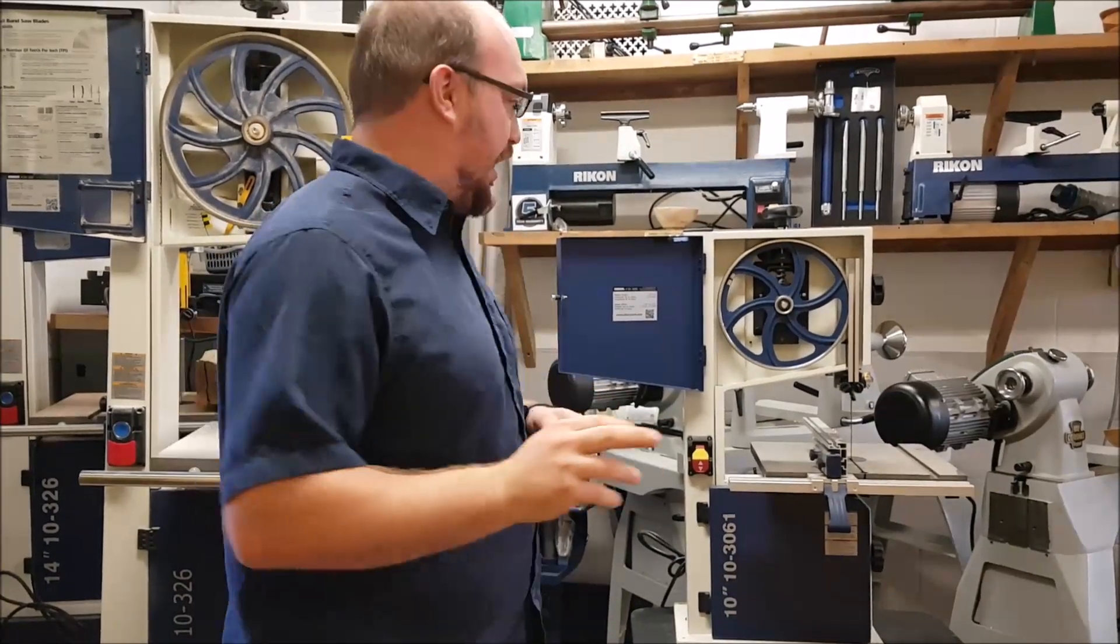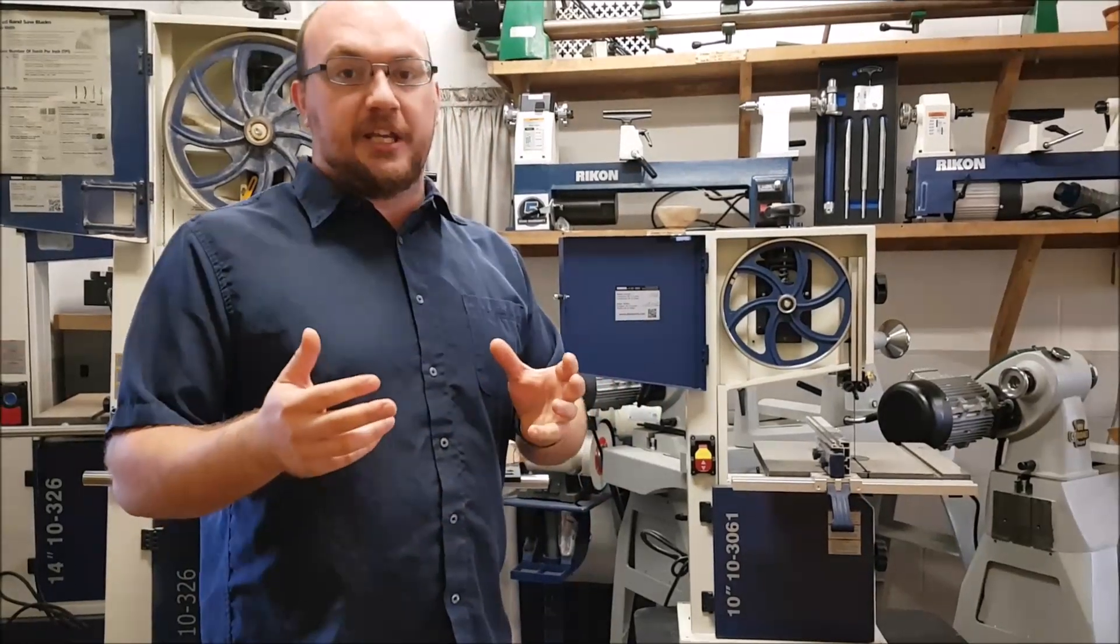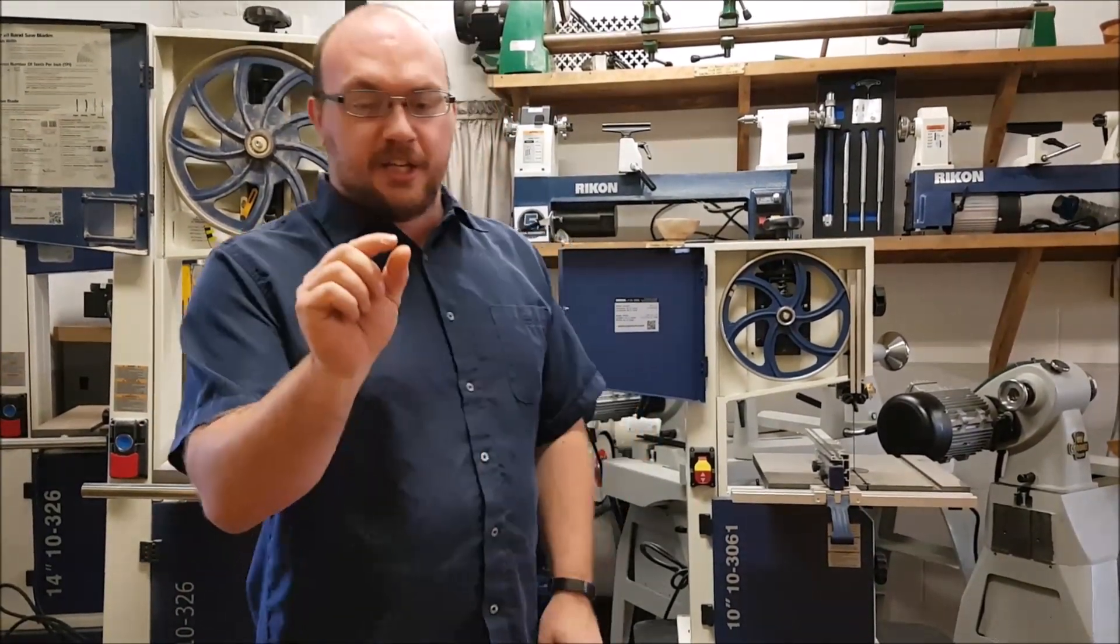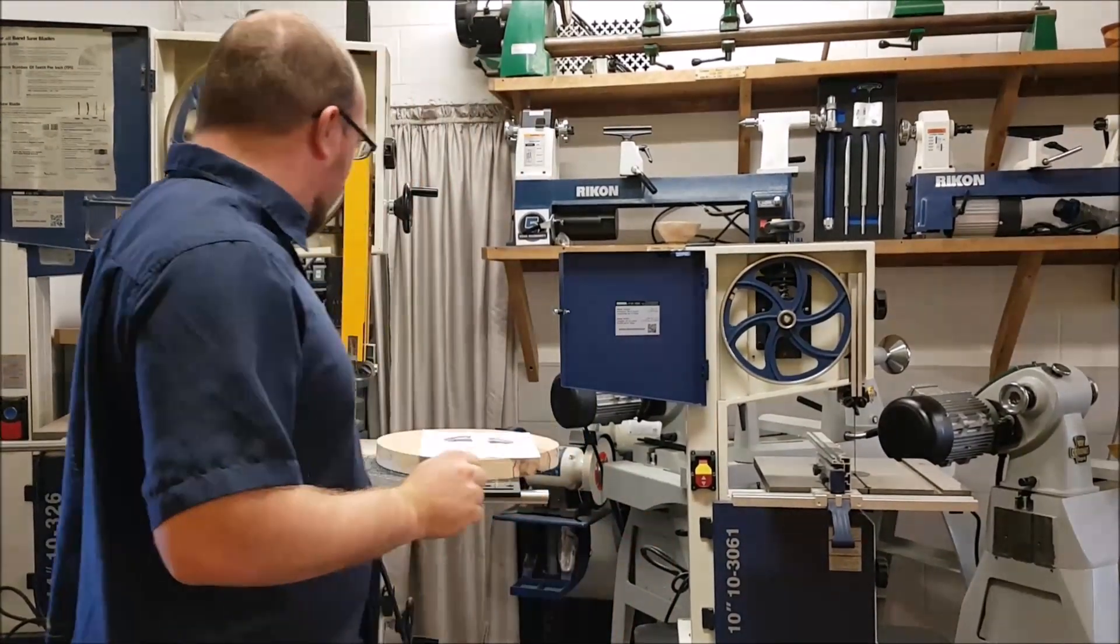Now, the first thing that I ask him is what kind of blade is he using? He's using something that he bought that they call a woodturner band. So a woodturner band is a little bit extra wide, a little bit extra kerf on that blade. So it's a little thicker.